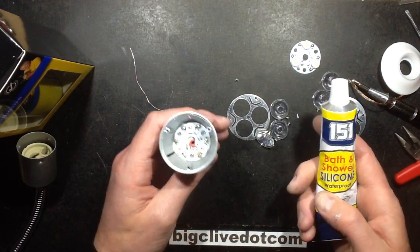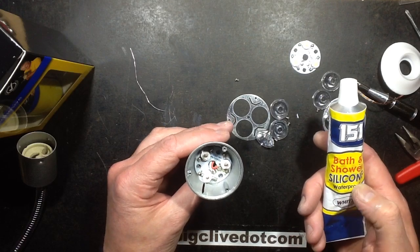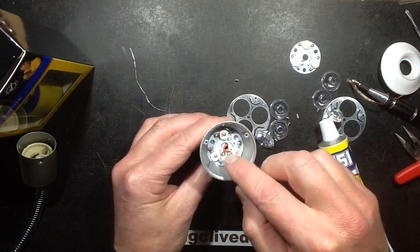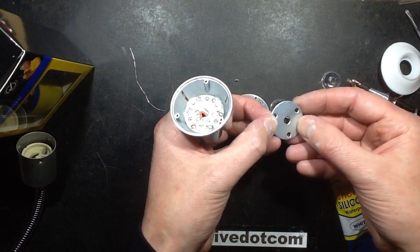I've used, probably not the ideal thing for it, but I've used bath and shower silicone, the white stuff, to put a tiny blob after cleaning the back circuit board. Basically a blob in between each of these holes.